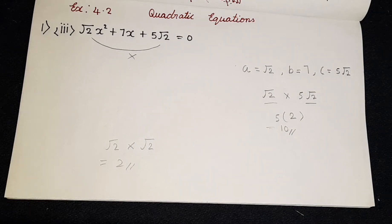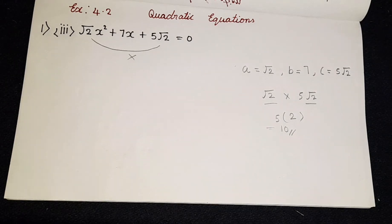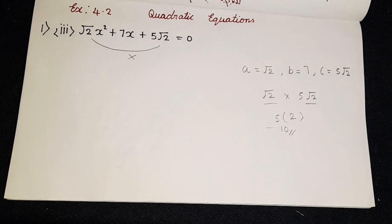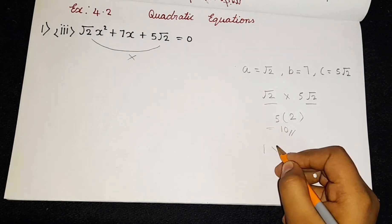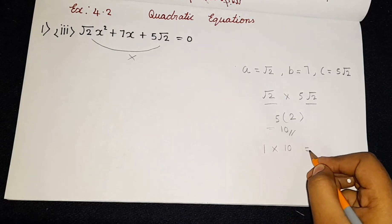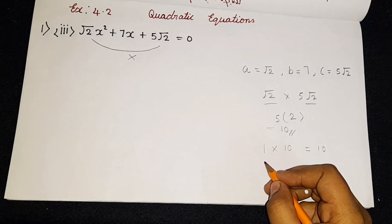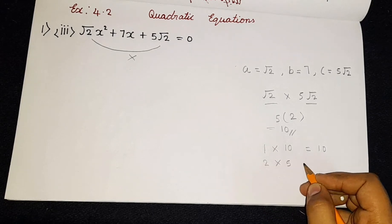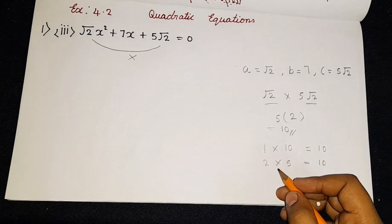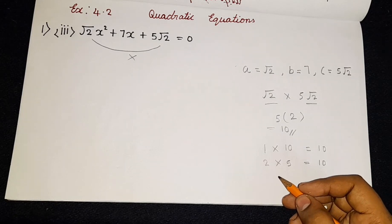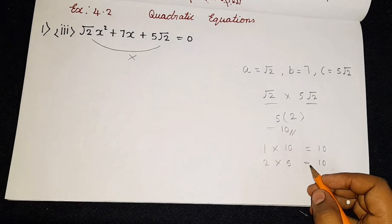Now we are going to be finding the factors of 10. What are the factors of 10? Factors means in which tables we get 10. So we get 10 in 1 times table — that is 1 into 10 is 10 — and we also get 10 in the 5 times table — that is 2 into 5 is 10. So now we have the factors of 10.